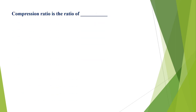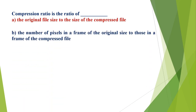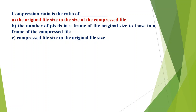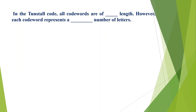Compression ratio is the ratio of: A) the original file size to the size of the compressed file, B) the number of pixels in a frame of the original to those in a frame of the compressed file, C) compressed file size to the original file size, D) none of the mentioned. The correct option is A, the original file size to the size of the compressed file.